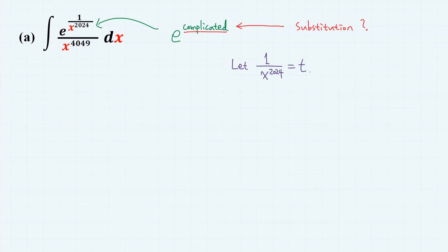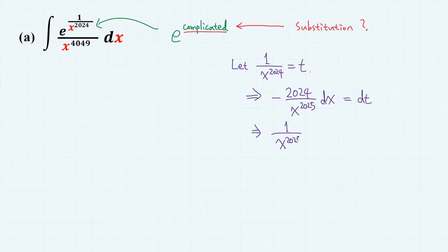Let 1 over x^2024 equal t. Then if we differentiate, we have minus 2024 divided by x^2025 dx equals dt. So 1 over x^2025 dx equals minus 1 over 2024 dt.